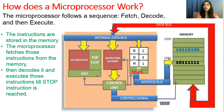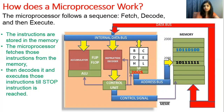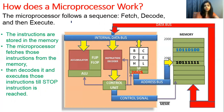After decoding, the processor understands what operation to perform — for example, addition — and then executes it. So the sequence is: fetch the instruction from memory, decode the instruction to find its meaning, and then execute — actually perform the operation, such as adding two numbers. This is the fetch-decode-execute cycle, and this is how a microprocessor works.